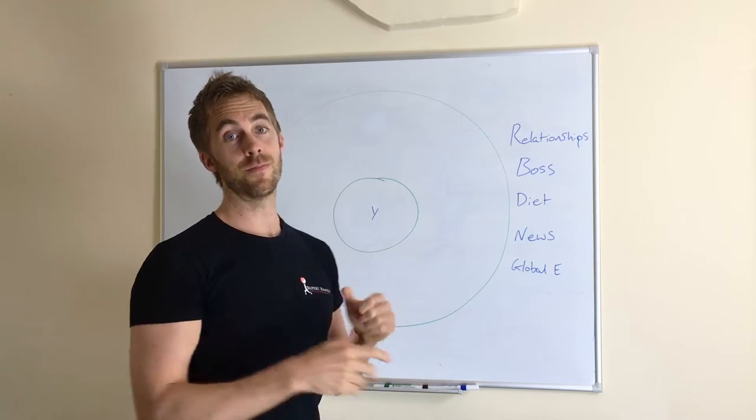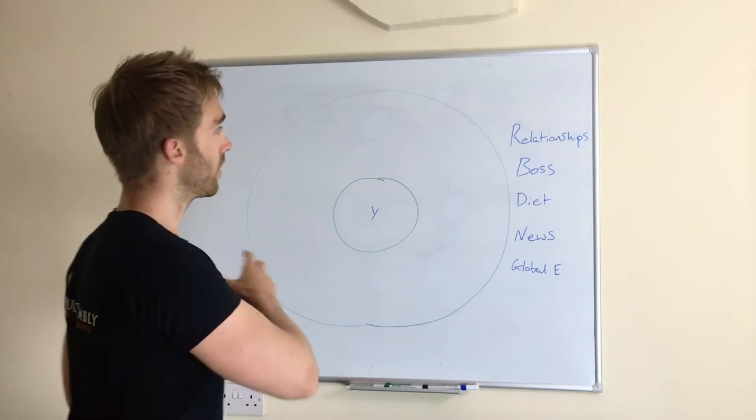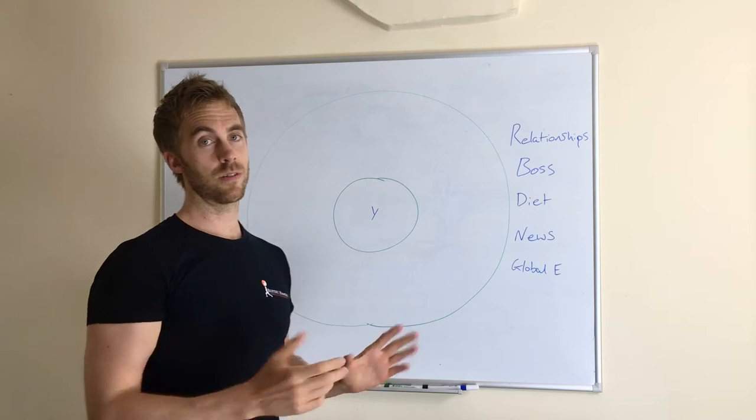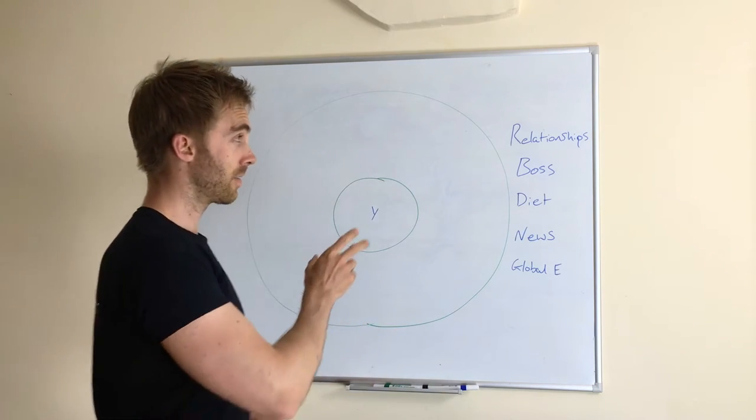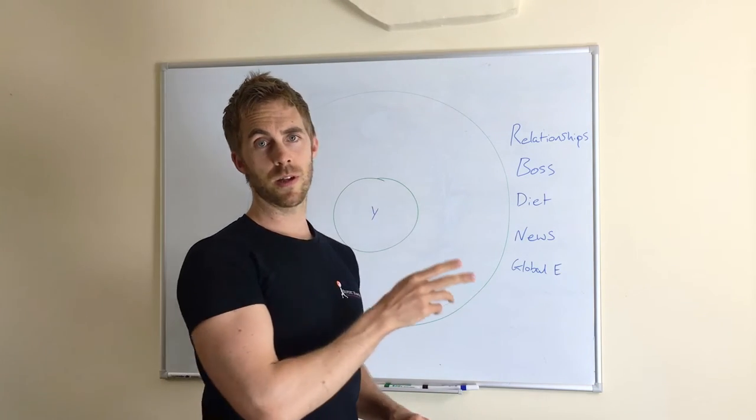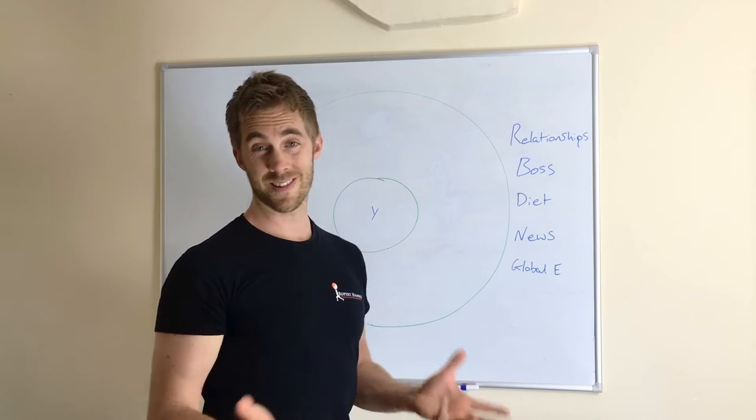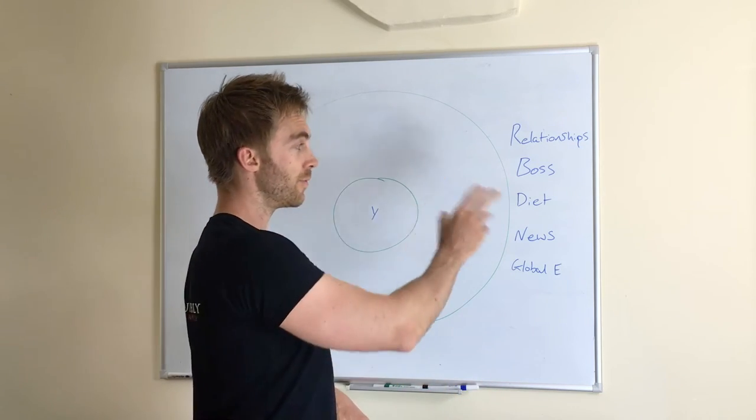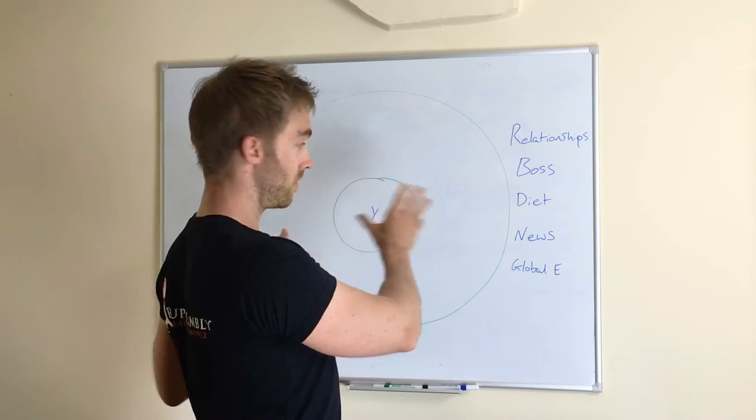Inner circle represents things you have influence over in your life. Outer circle represents things you don't. Make a list of three to five different things that are causing you stress and anxiety in your life and divide those things up into those two circles.